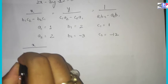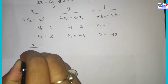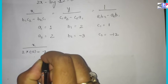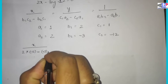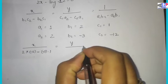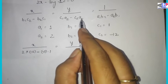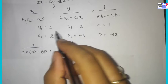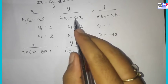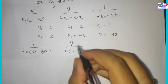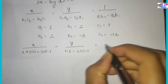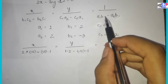For x: b1·c2 minus b2·c1 — that is b1 which is 2, into c2 which is minus 12, minus b2 which is minus 3, into c1 which is 1. This gives us the x numerator.